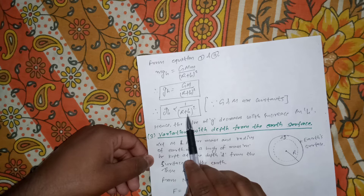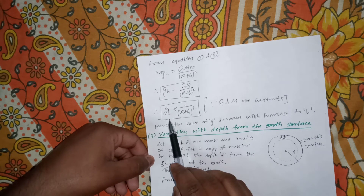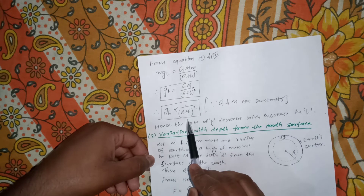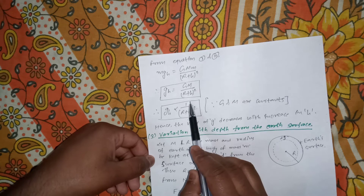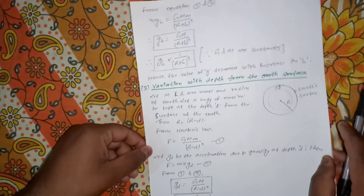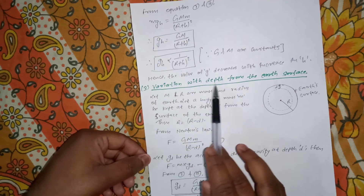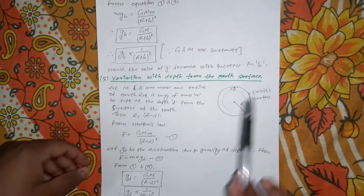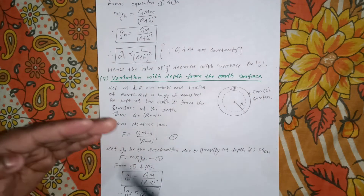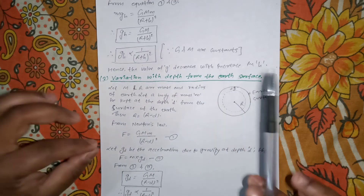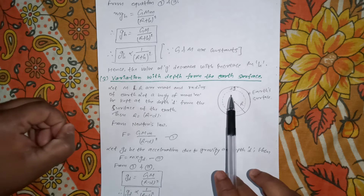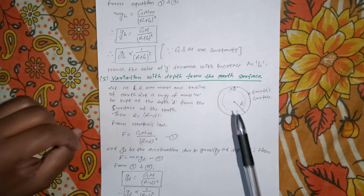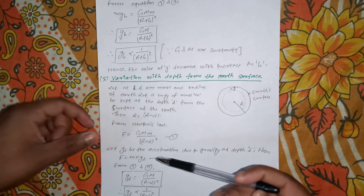Hence the value of g decreases with increase in h. If we increase h, the value of g will decrease, and if we decrease h, the value of acceleration due to gravity will increase. Now let's see the third and last condition: variation with depth from the Earth's surface. If we dig into the Earth and place something at a depth d, there will be a certain change in the acceleration due to gravity. Let us derive the formula.